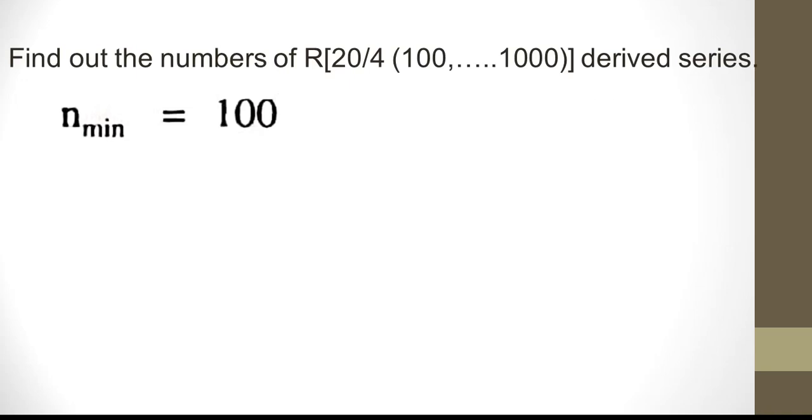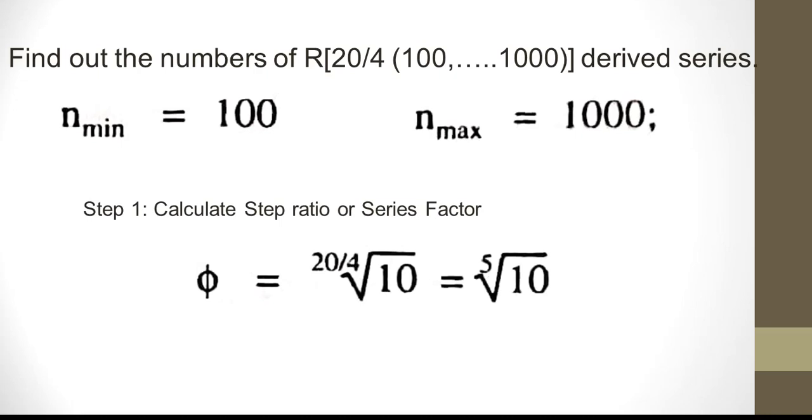So n minimum, which is n1, is 100. N maximum is 1000. We want to calculate the step ratio or series factor, which is denoted by symbol phi.